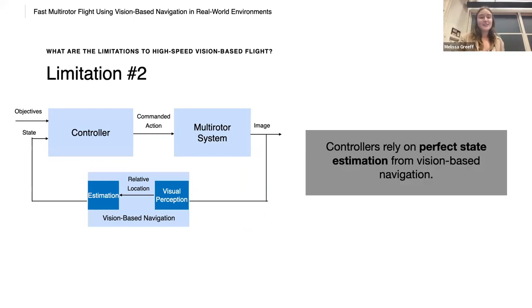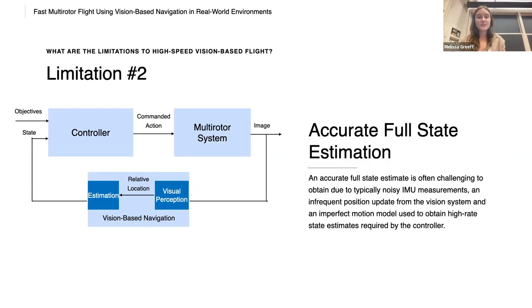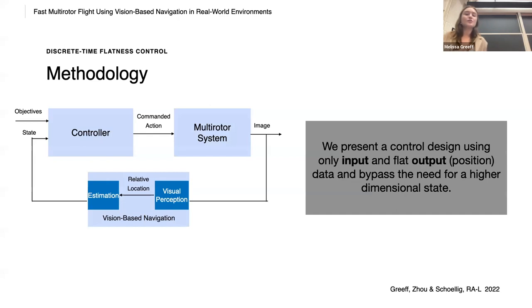The second limitation is that many controllers rely on perfect state estimation from vision based navigation. And an accurate full state estimate is often challenging to obtain due to typically noisy IMU measurements and infrequent position update from the vision system due to computational demands, and imperfect motion model used to obtain the high rate state estimates required by the controller. And so we present a control design using only input and flat output or position data in our case and bypass the need for a higher dimensional state.